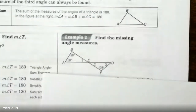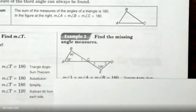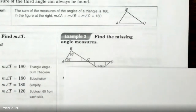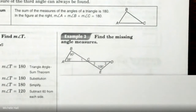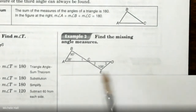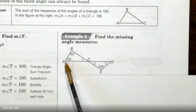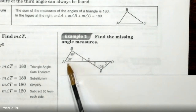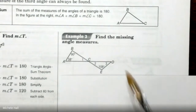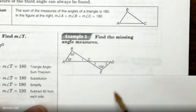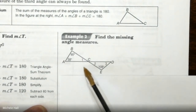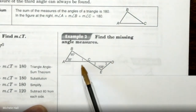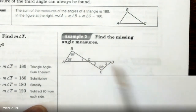Now looking at the next triangle, trying not to look at the answers. We have a 90-degree angle. We're looking for angles 1, 2, and 3.